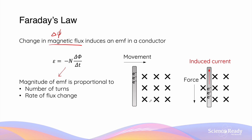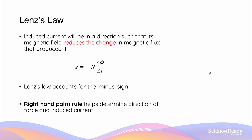In the video on Faraday's law, we looked at an example where a straight conductor is moved into a uniform magnetic field, and as a result, an induced current is observed in the conductor. Lenz's law explains the direction of the induced current. The law states that the induced current will be in a direction such that its magnetic field reduces the change in magnetic flux that produced it in the first place.